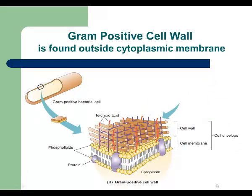This slide shows the cell envelope of gram-positive bacteria, which is composed of two layers. The innermost layer is the cell membrane or plasma membrane, and the second layer is the cell wall. It is made of several layers of peptidoglycan, so the cell wall of gram-positive bacteria is thick. There is an additional structure called teichoic acid that holds those layers of peptidoglycan together, penetrating the layers and giving the cell wall integrity and stability.